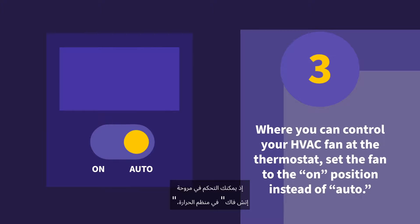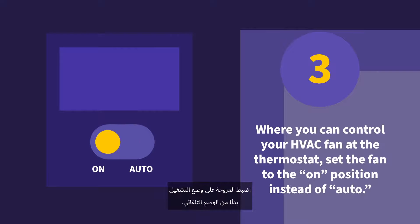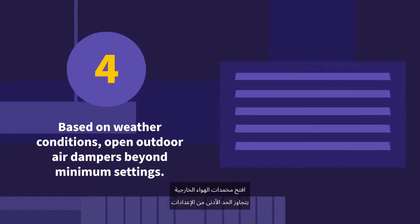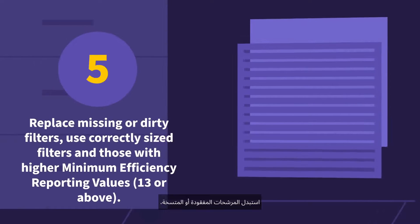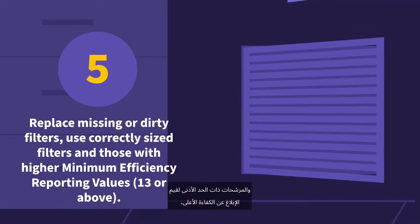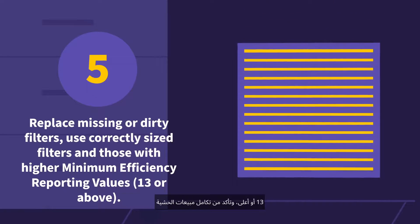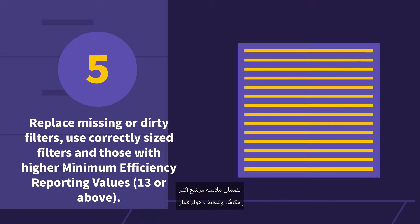Where you can control your HVAC fan at the thermostat, set the fan to the on position instead of auto. If possible, based on weather conditions, open outdoor air dampers beyond minimum settings to reduce HVAC air recirculation. Replace missing or dirty filters, use correctly sized filters and those with higher minimum efficiency reporting values — MERV 13 or above — and confirm gasket seal integrity to ensure a tighter filter fit, efficient air cleaning, and to prevent recirculation of infectious particles throughout the building.